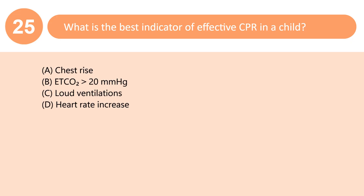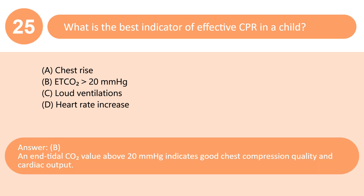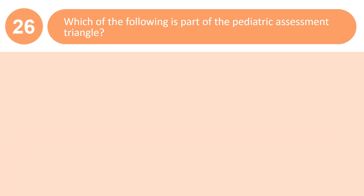What is the best indicator of effective CPR in a child? A. Chest rise. B. ETCO2 greater than 20 mmHg. C. Loud ventilations. D. Heart rate increase. Answer: B. An end-tidal CO2 value above 20 mmHg indicates good chest compression quality and cardiac output.